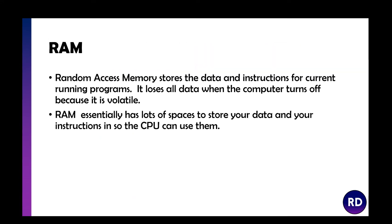A quick recap: RAM or DRAM is random access memory and it stores the data for current running programs. It loses all data when the computer turns off because it is volatile. But RAM essentially has lots of spaces and slots to store your data and instructions so the CPU can use them.